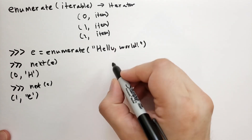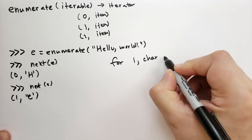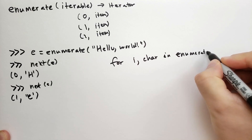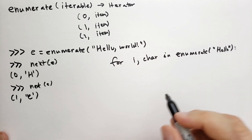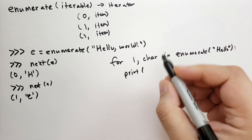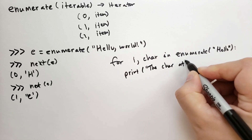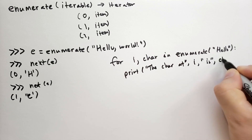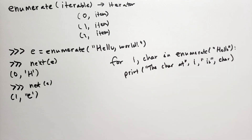In a for loop, enumerate is particularly useful. For example: for i, char in enumerate('hello'): print(f'The char at {i} is {char}'). That'll not only tell you the index, but also the character.